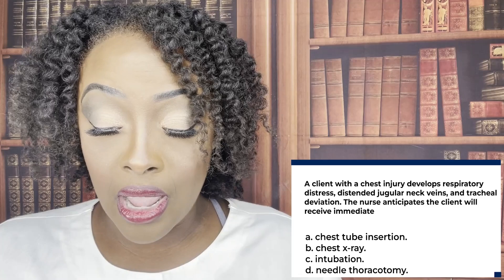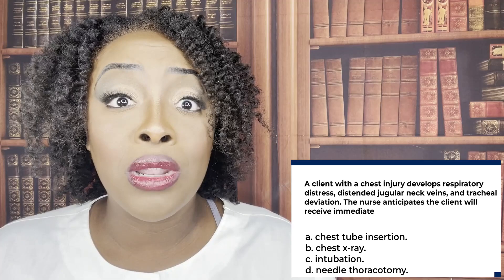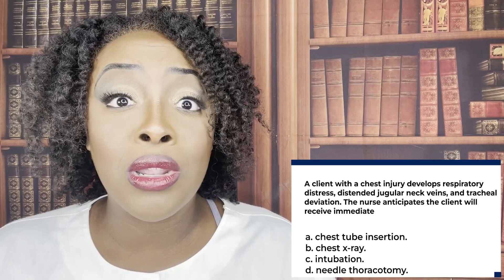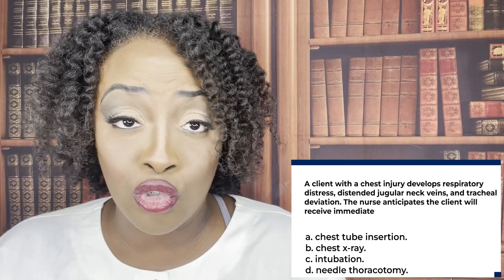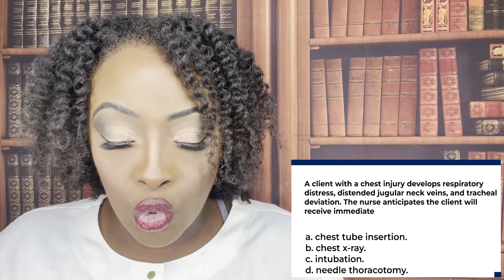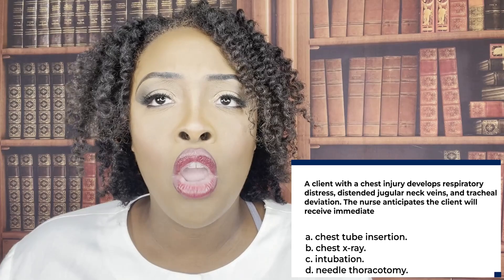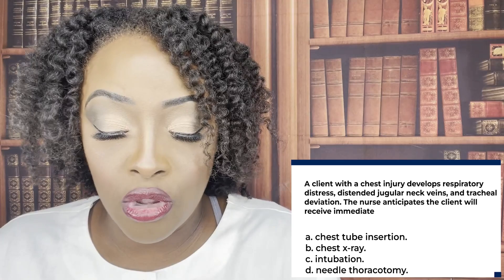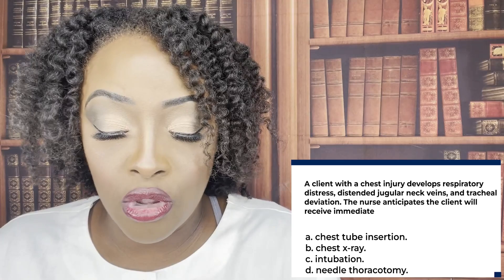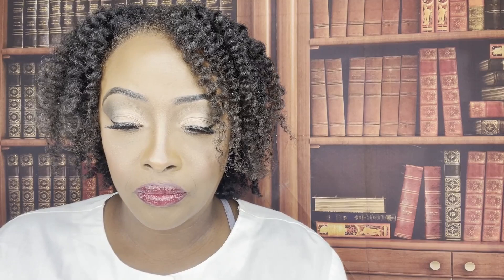The correct answer is D — needle thoracotomy. That patient is going to get a large-bore IV needle inserted immediately — this is a life-saving measure. Choice A, chest tube — we expect that eventually, but it's not the first thing. Choice B, chest x-ray — expected, but not first. Choice C, intubation — after the needle thoracotomy, depending on perfusion and breathing, they may be intubated, but the first thing is life-saving treatment: the needle thoracotomy with a large-bore catheter. D is the correct answer.